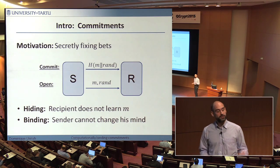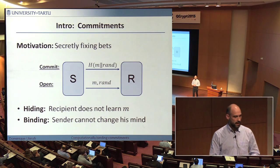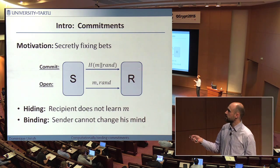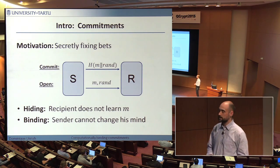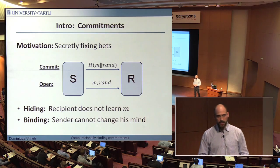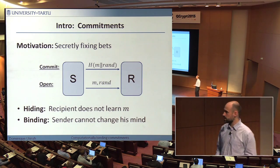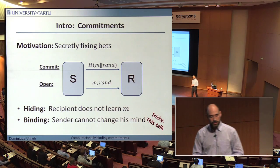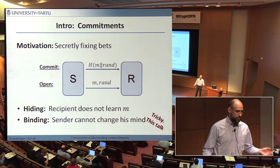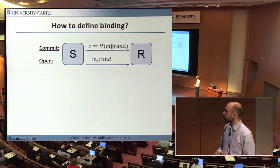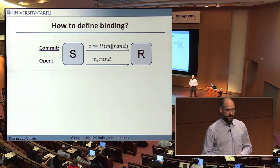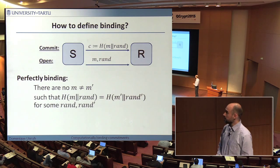Now the question is how do we define these two properties. The hiding property is quite easy to define — basically it's just some indistinguishability: no matter what value I put in, the quantum state the recipient gets is close in trace distance. The tricky part is the binding property, and I will talk today about how to define binding. Let me show you some definitions of binding that you could use. The first and simplest is perfectly binding.